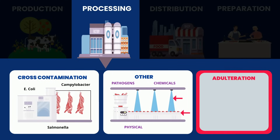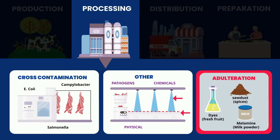Food adulteration is the fraudulent practice where unnecessary, inferior, or toxic chemical or physical compounds are intentionally added to food to improve its appearance, taste, reduce cost, or make it last longer.